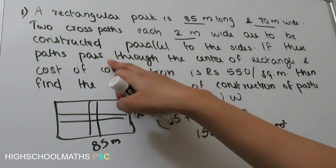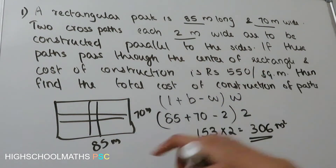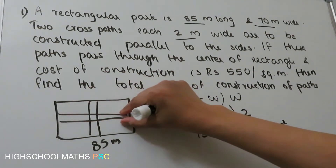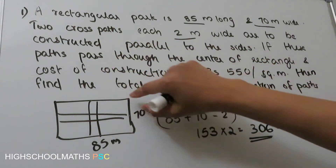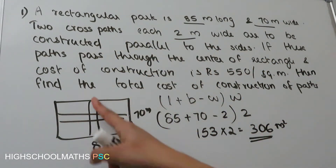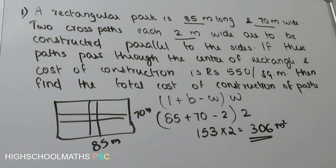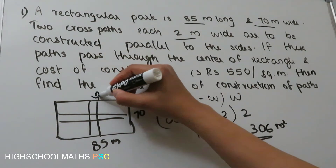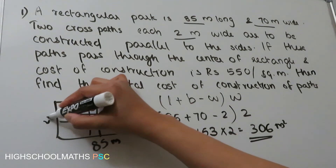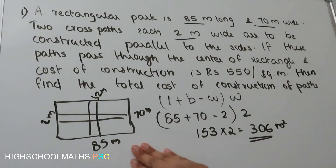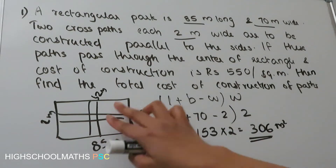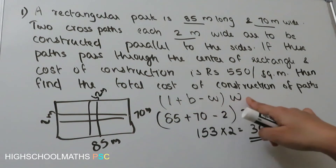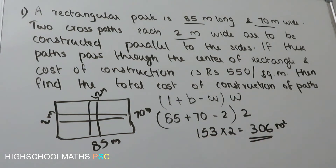If these paths pass through the center of the rectangle, the length of the path parallel to the center is the width. In this case the width is 2 meters, and the area is L plus B minus W, into W.